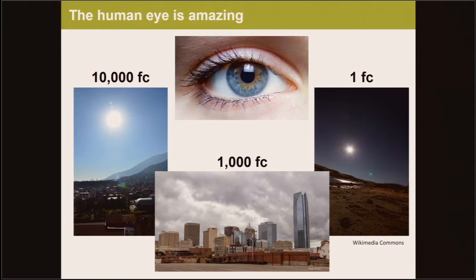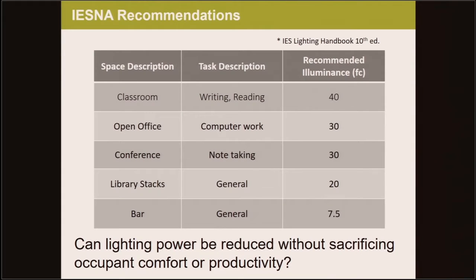It turns out our eyes are pretty amazing. They can quickly and dynamically adjust to clearly see in a wide range of environments, from sunny days at 10,000 foot candles, to cloudy days at about 1,000, to moonlit nights that have less than a foot candle. That's an order of magnitude adjustment of over 10,000 times. For commercial buildings, the Illuminating Engineering Society of North America publishes recommended amounts of light, called illuminance in foot candles, by space type and more directly by visual task. The more visually intense the task, the higher the recommended light level. Classrooms where you need to read and write require 40 foot candles, and bars where you don't need to do anything particularly visually intense require only 7.5 foot candles.